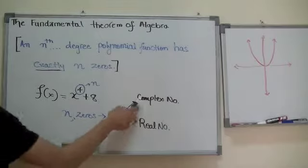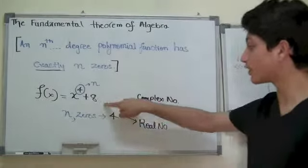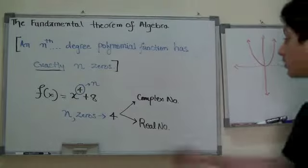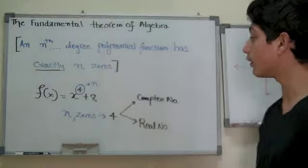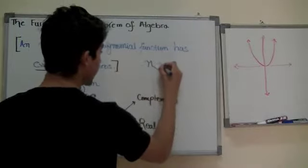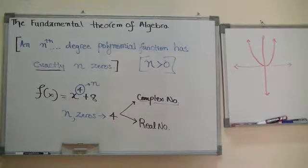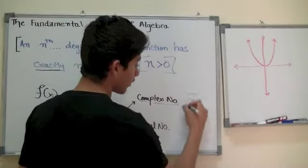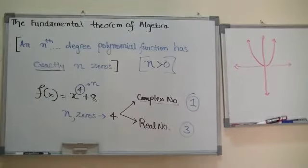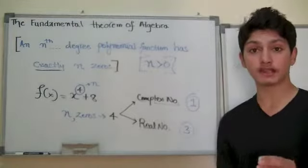And those 4 zeros, including them, could be complex numbers or real numbers. In most cases, both of them are mixed together. So I don't know the exact zeros of the function, but it could mean this function has two complex numbers and two real numbers, or at minimum one complex number. That is the minimum requirement — if you have an nth degree polynomial with n greater than zero. To understand this concept, we actually need to know factorization because this equation will lead us to factorizations.